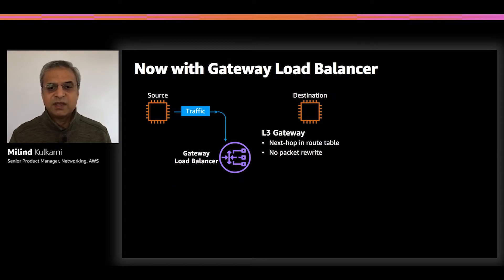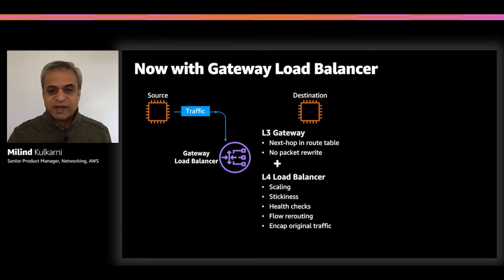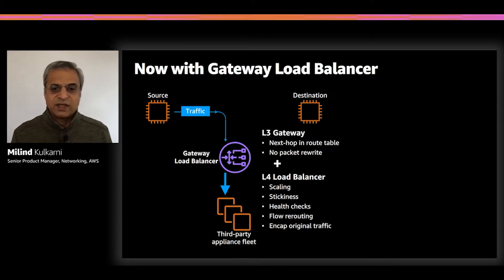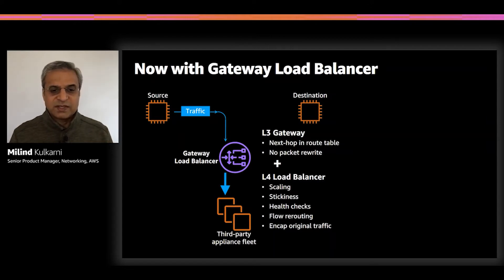At the same time, when the Gateway Load Balancer receives traffic, it acts as a layer four load balancer, providing scale to the appliance, elasticity to the appliances, and stickiness of flows in both directions so the appliances can see the traffic in both directions and act on it.